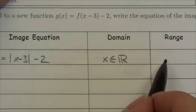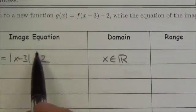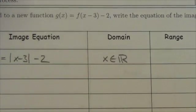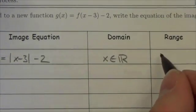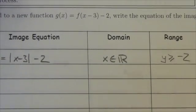However, the range of an absolute value function, the original one, was greater than or equal to 0. Now, moving it to the right won't change that, but moving it 2 down will, so this will become y is greater than or equal to negative 2.